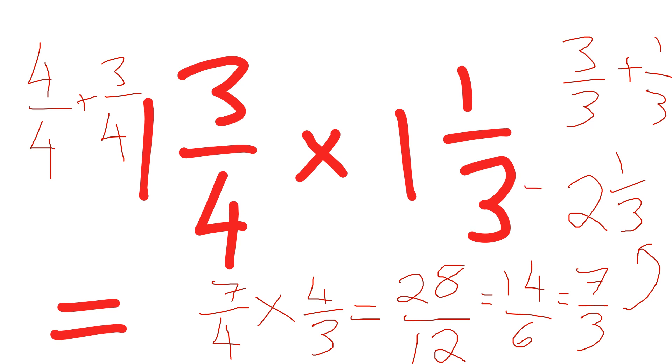So one and three quarters multiplied by one and one third equals two and a third. And again, this is a classic textbook question that appears every single year without fail on GCSE maths higher tier for Edexcel OCR AQA and even the IGCSE international maths exams.